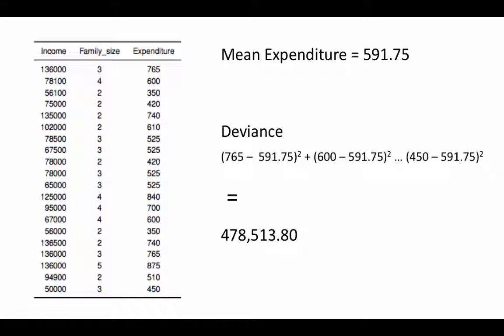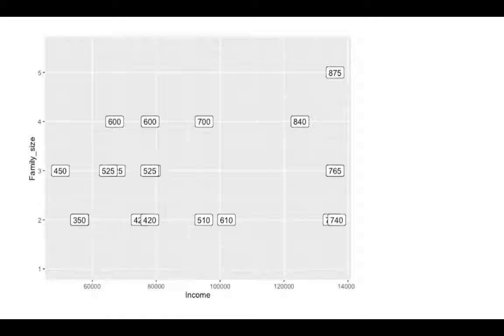So that's the overall deviance currently. What we are trying to do is split the data into two sets using some rule, then take the deviance of each of the two sets and add them up. We want the resulting total deviance to be much less than 478,514 — that's what we are trying to do.